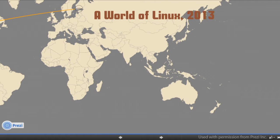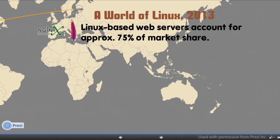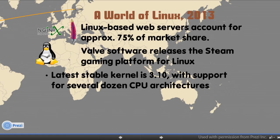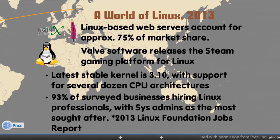So that brings us to Linux today in 2013. Linux-based web servers account for nearly 75% of market share. The most common Linux servers in use are Nginx, a very fast and efficient web server, and Apache HTTPD, which has been around since the 90s. Valve Software, a gaming company, released its Steam gaming platform for Linux this year. The stable version of the Linux kernel is version 3.10 and supports dozens of CPU architectures. Linux is on the bleeding edge of new OS technology and networking support, and is also a leader for jobs — 93% of surveyed businesses are hiring Linux professionals, with sys-admins being the most sought after, according to a job report from the Linux Foundation. Hopefully this section gave you some context about how Linux got to where it is today and why it's absolutely imperative to the success of the Internet.